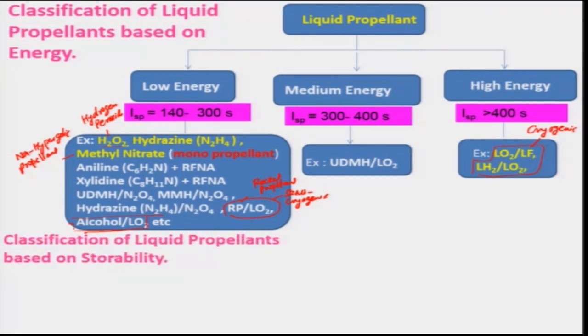We can also classify liquid propellant based on storability. It is very important that we need to store the propellant for a longer period without undergoing any chemical or thermal changes. Liquid propellant rocket engines have a lot of applications — for missile applications, for space launching vehicles, for space satellites, attitude control of satellites, and several others.